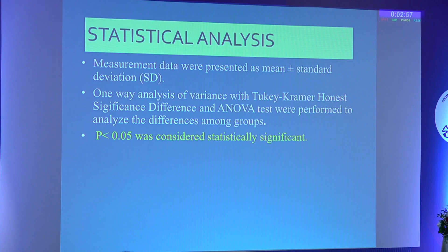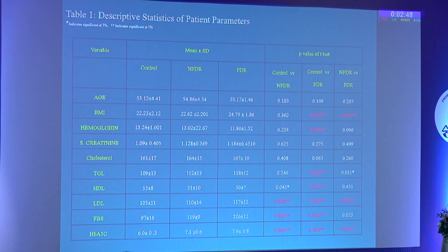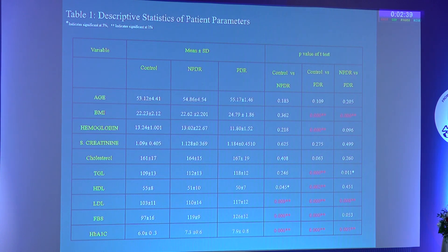Statistical analysis was done using standard statistical tests, and a p-value of less than 0.05 was considered statistically significant. Coming to results — descriptive statistics of patient parameters including age, BMI, hemoglobin, serum creatinine, cholesterol, triglycerides, lipid profile, and blood sugar were recorded. There was not much variation between the groups in these baseline parameters.